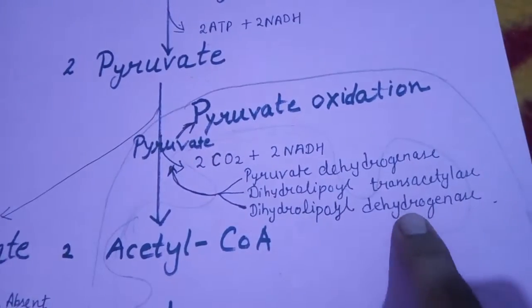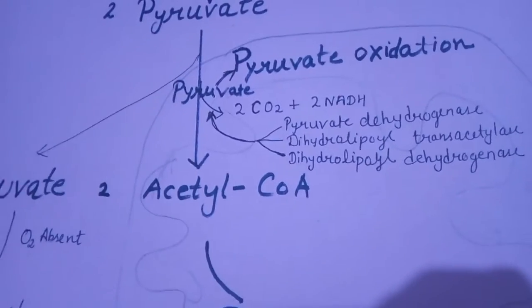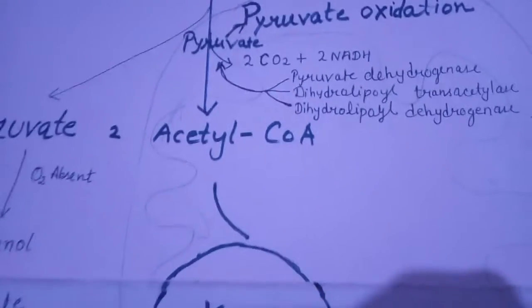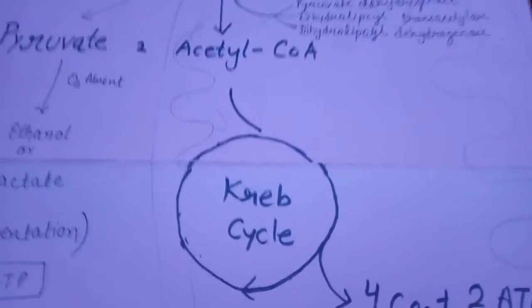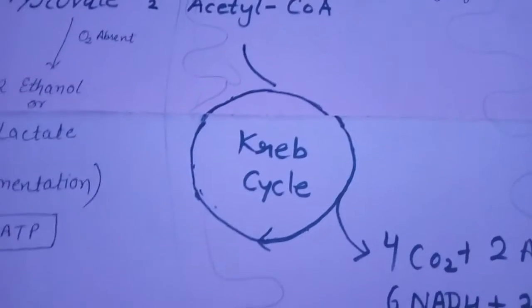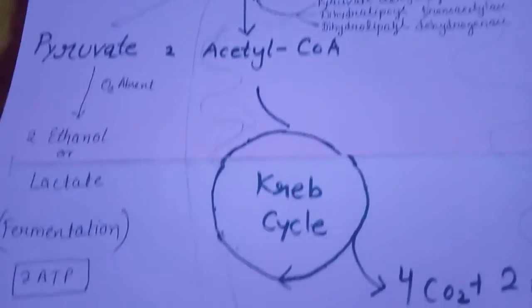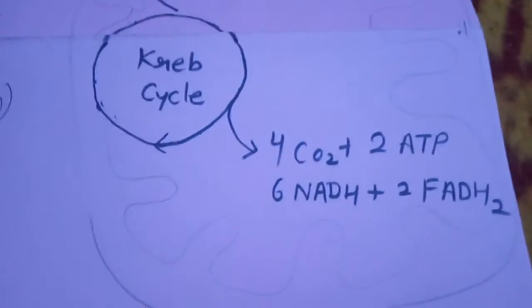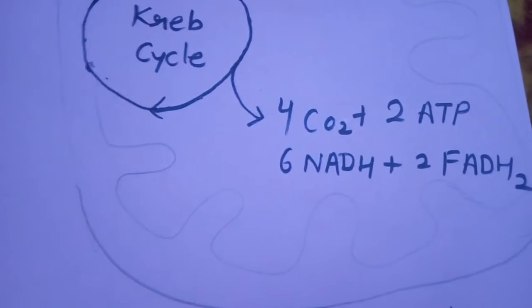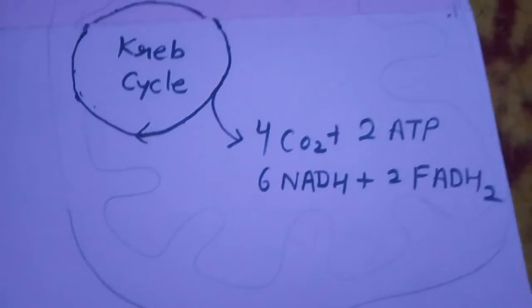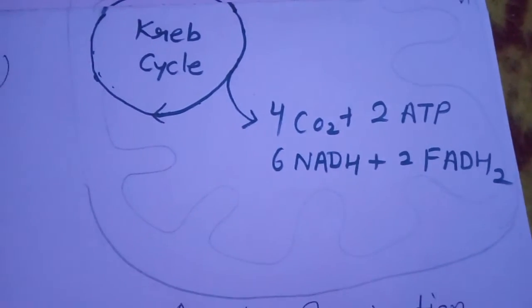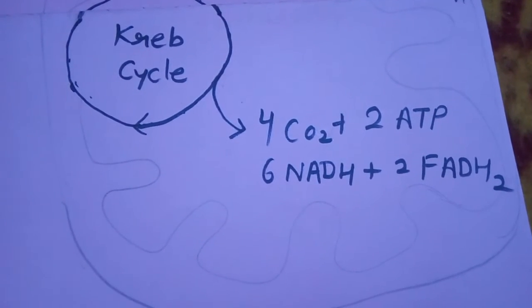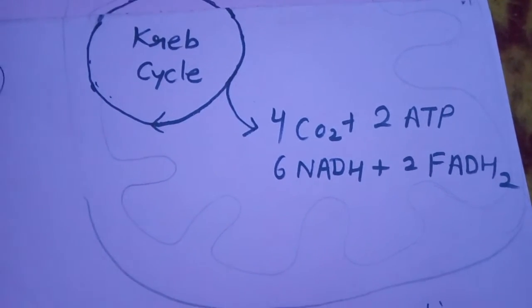The result of these enzymes is acetyl coenzyme A, which enters into the Krebs cycle. After the running of the Krebs cycle, the result is the production of two molecules of ATP, six NADH, two FADH2, and four molecules of CO2.